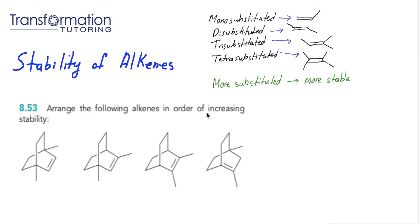To arrange the following alkenes in order of increasing stability, we need to know that the more substituted the double bond or alkene is, the more stable it is. What do we mean when we say more substituted?